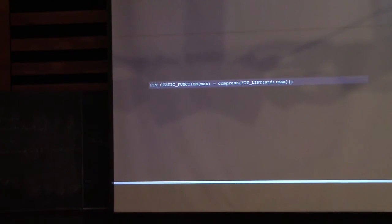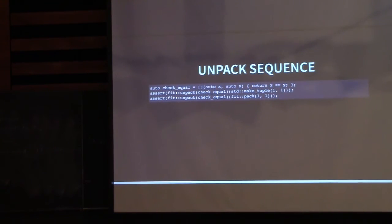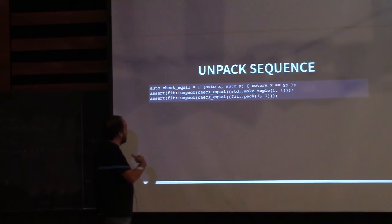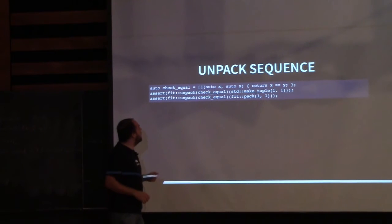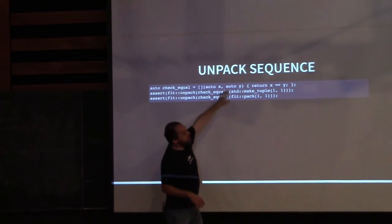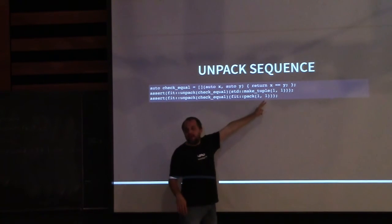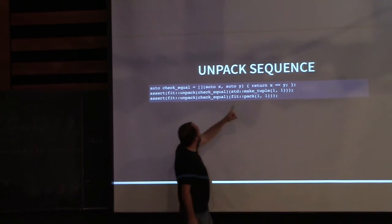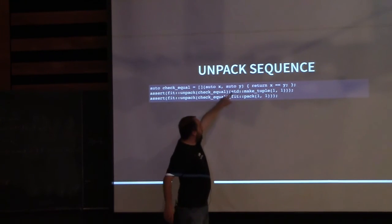Moving on to heterogeneous sequences and applying algorithms to them. The fit library provides an 'unpack' function: given a function and a tuple, it unpacks the tuple arguments and passes them to the function. For example, check_equal takes two arguments and returns true if equal; when you pass in a tuple, it unpacks those arguments. It works like std::apply.